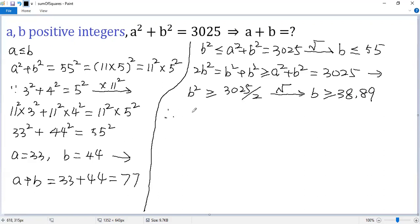So the range for b would be b greater than or equal to 39 but less than 55. But when b equals 55, a equals 0. Not good, because a must be positive integer. So b less than or equal to 54.